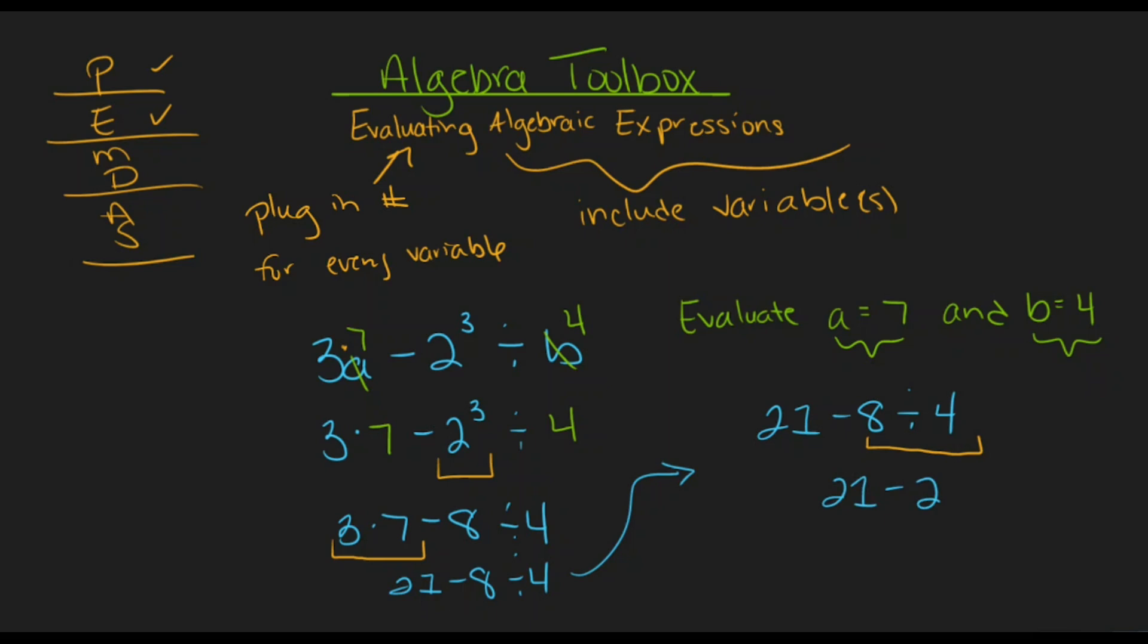And last but not least, we have our subtraction. So 21 minus 2 takes us to 19. Now we have successfully evaluated this algebraic expression for the values of the variables that we were given, a equaling 7 and b equaling 4.